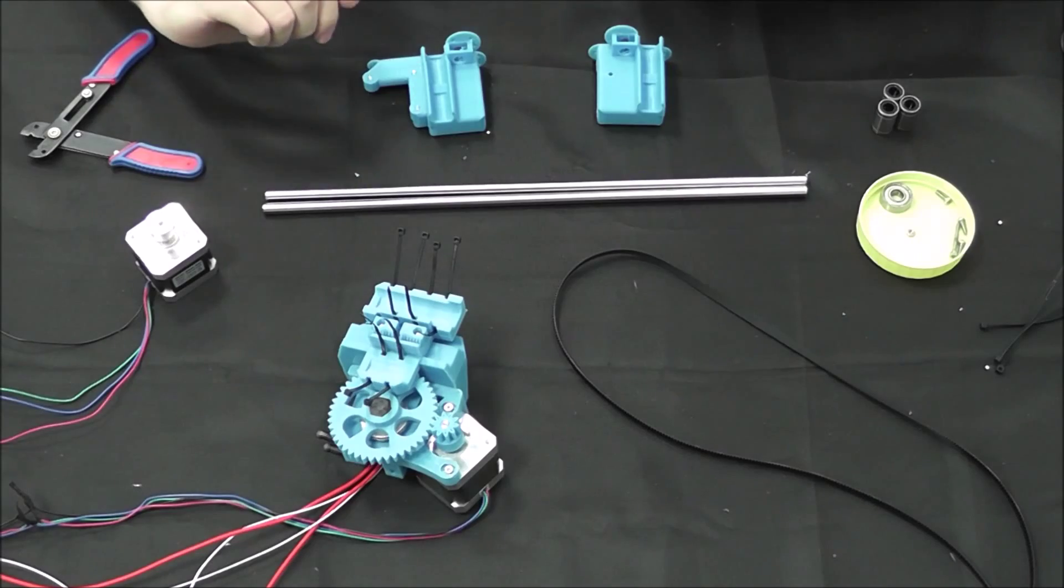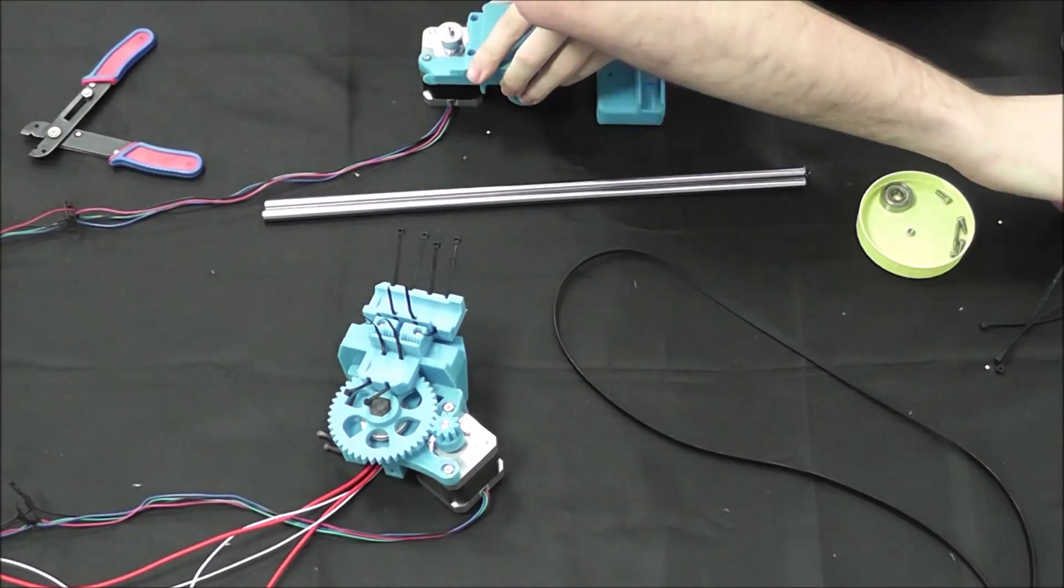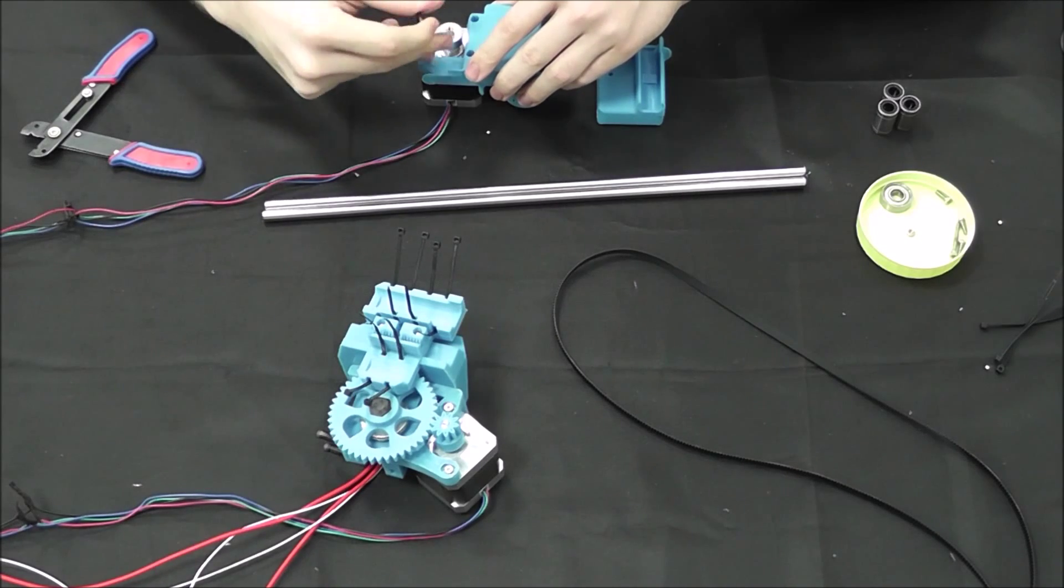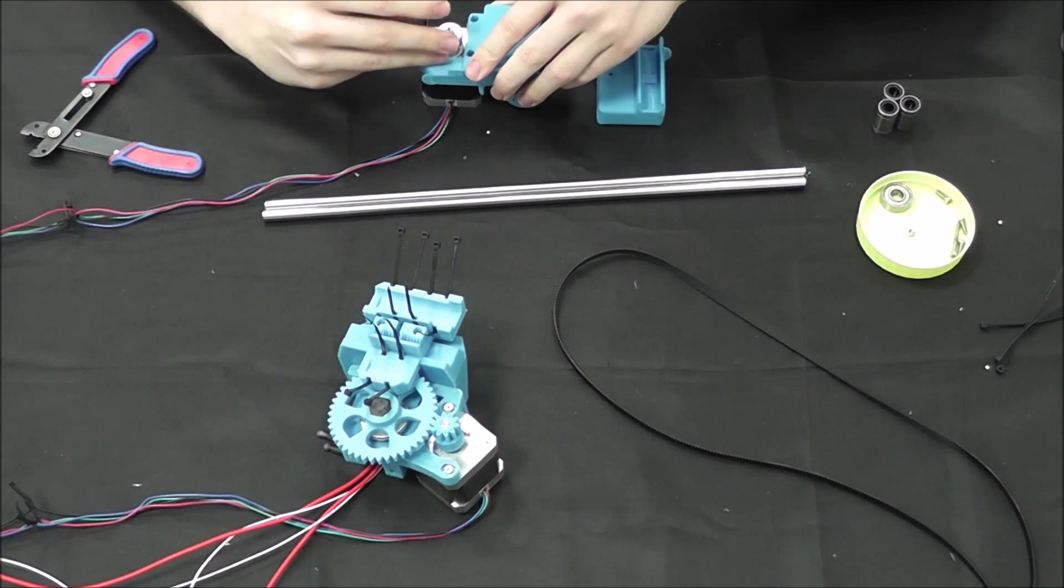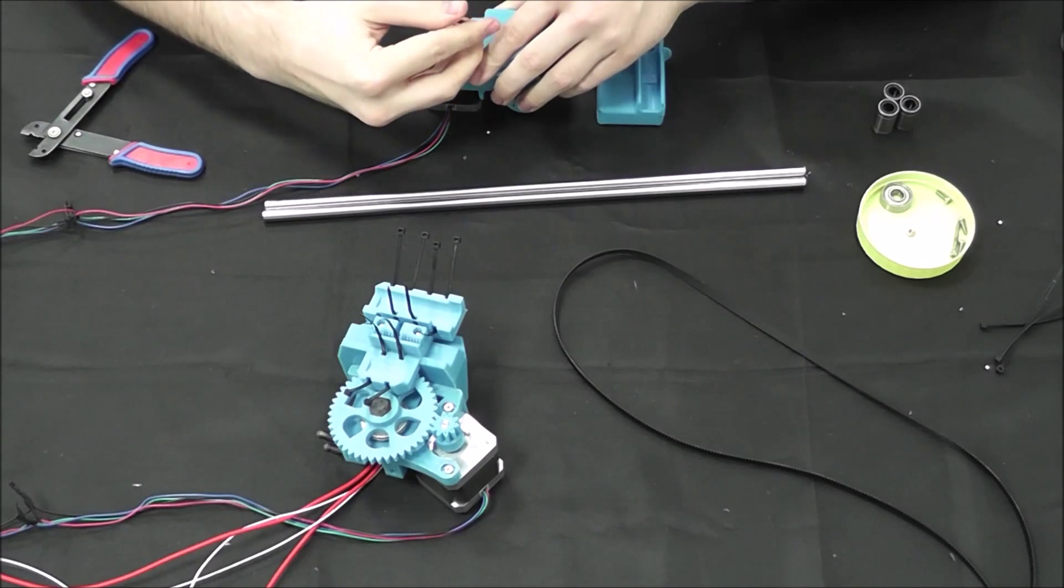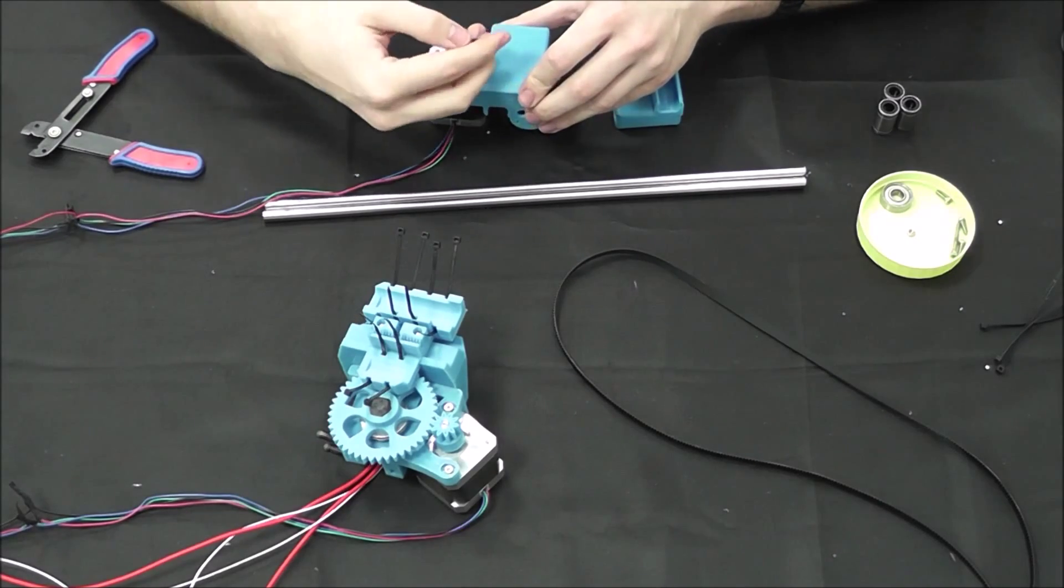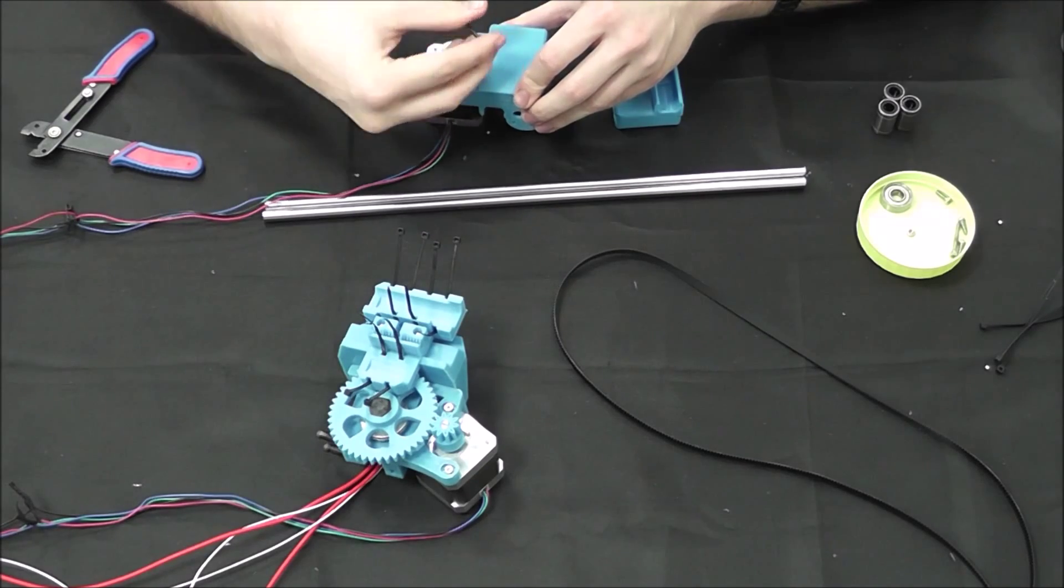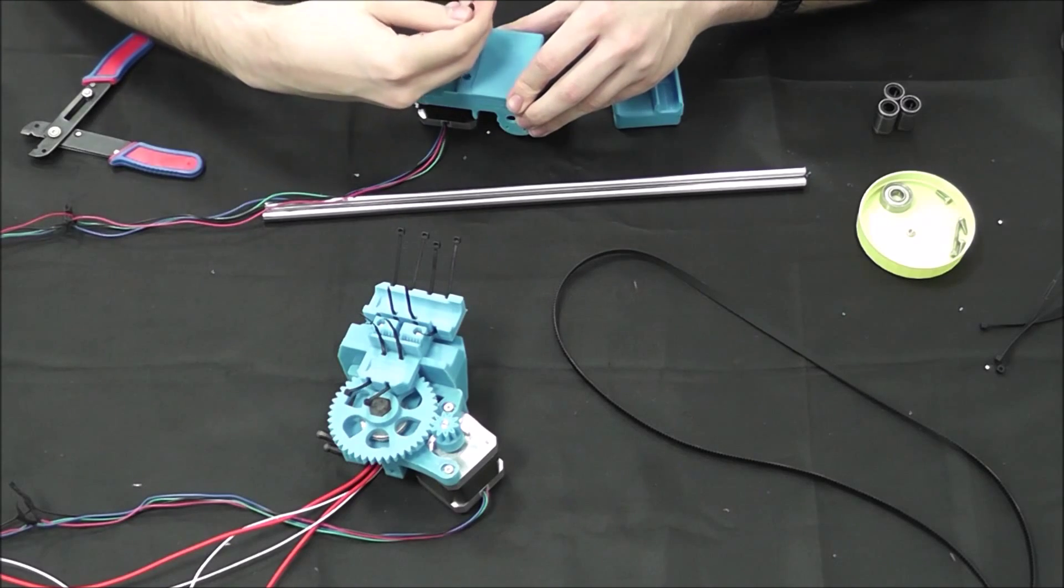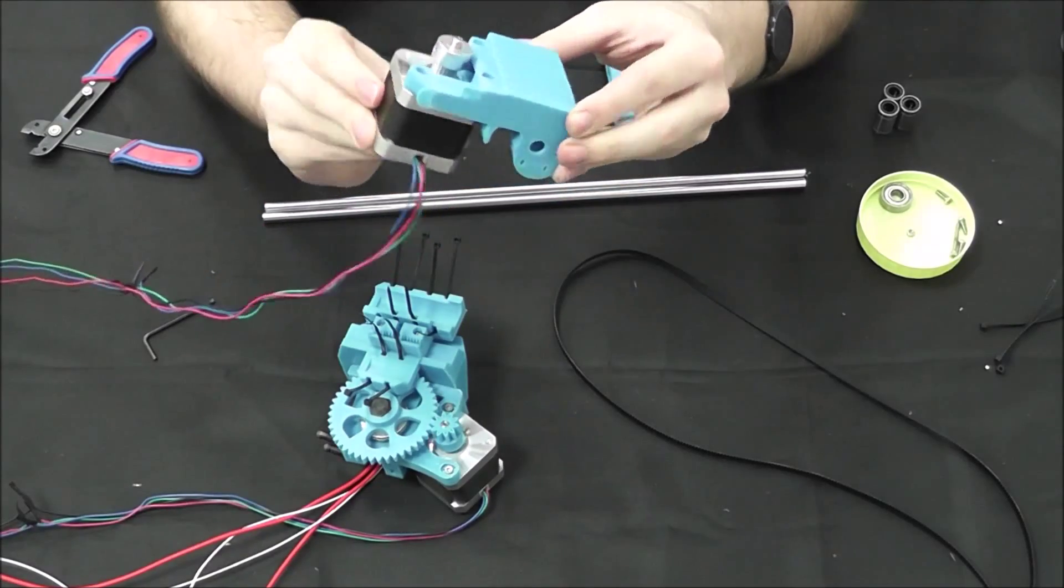We're going to start this off by attaching our motor to the motor mount. You're going to want the shaft of the motor facing the flat end of the motor mount, that way the timing belt teeth line up perfectly with the hole that goes through the center. Let me take a second here and tighten that in. All right, so our motor is securely on the x-end motor mount.